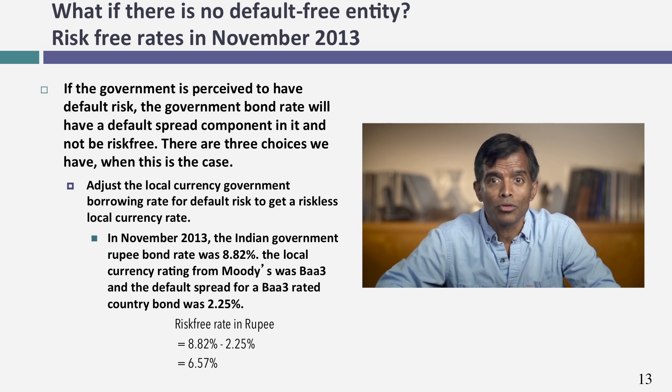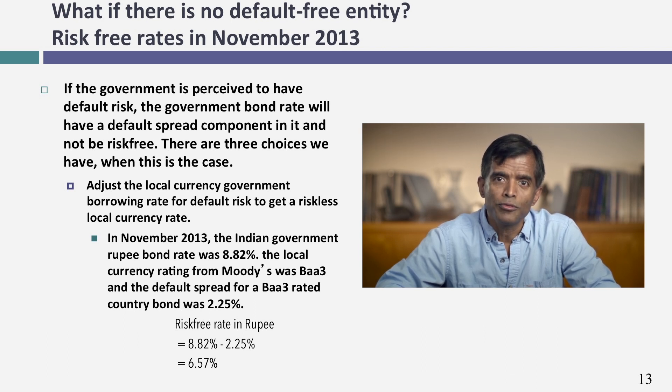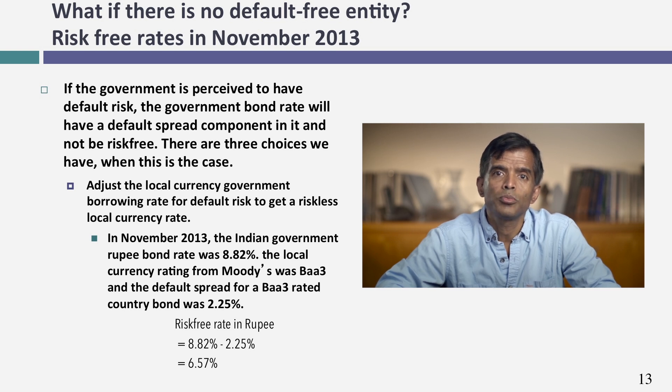If you can estimate the default spread, here's what the risk-free rate in Indian rupees becomes: 8.82% minus 2.25% equals 6.57%. So to get a risk-free rate in any local currency, take the government bond rate and net out the default spread for that government — you get a risk-free rate in that currency. That's the first choice: stick with the local currency and back out a risk-free rate from the government bond.